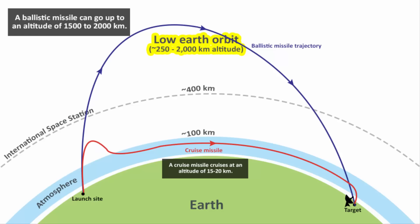So imagine, here is an enemy radar and this is the radar's field of view. That means a ballistic missile will be detected much earlier compared to a cruise missile.